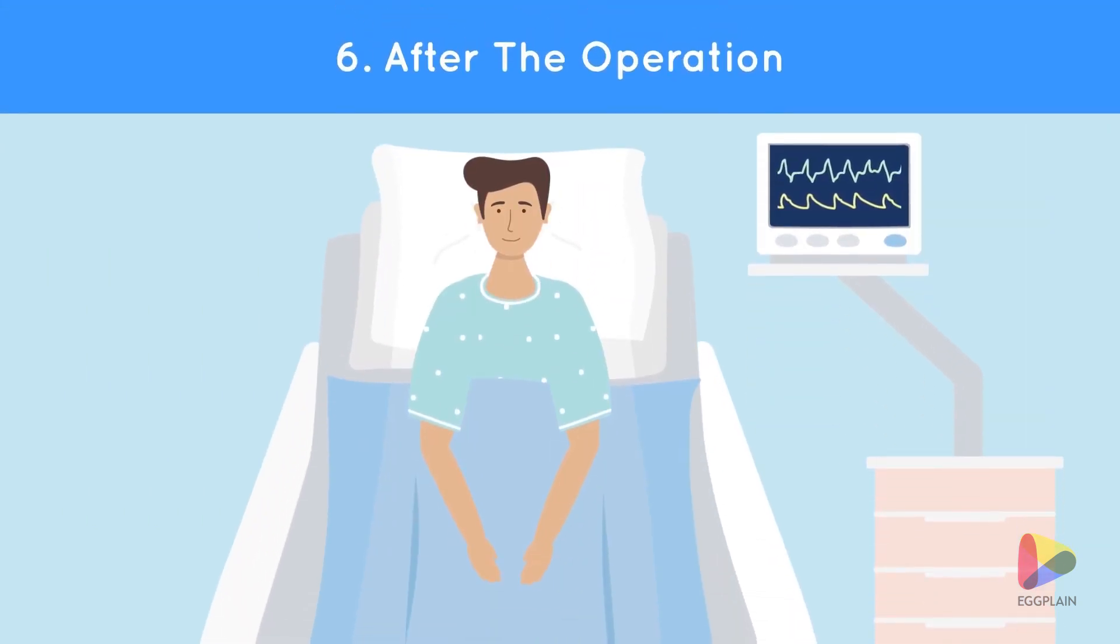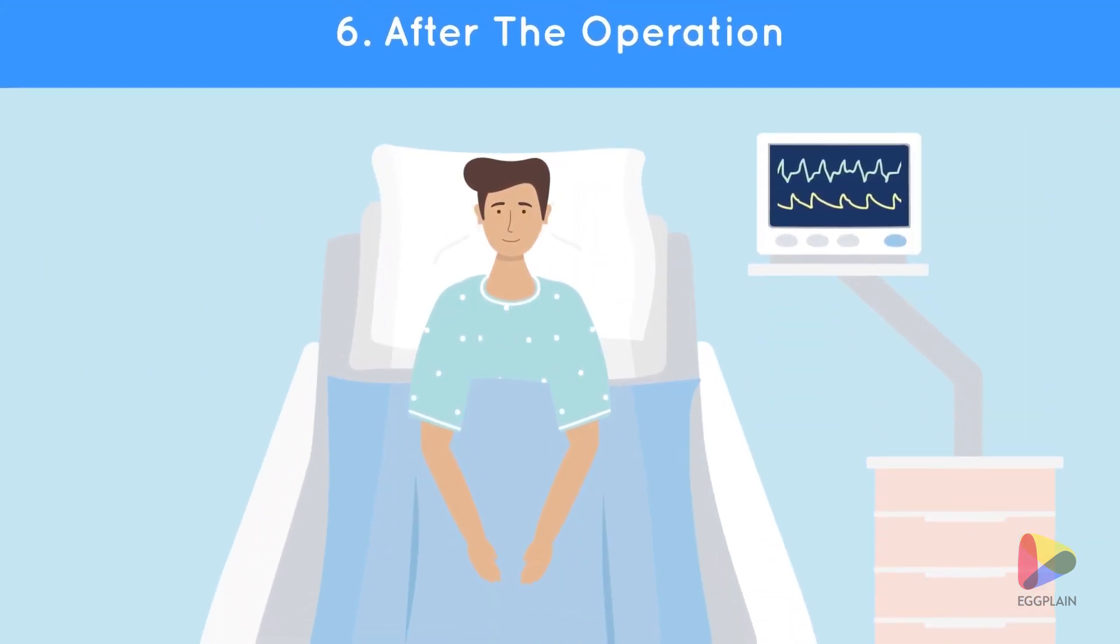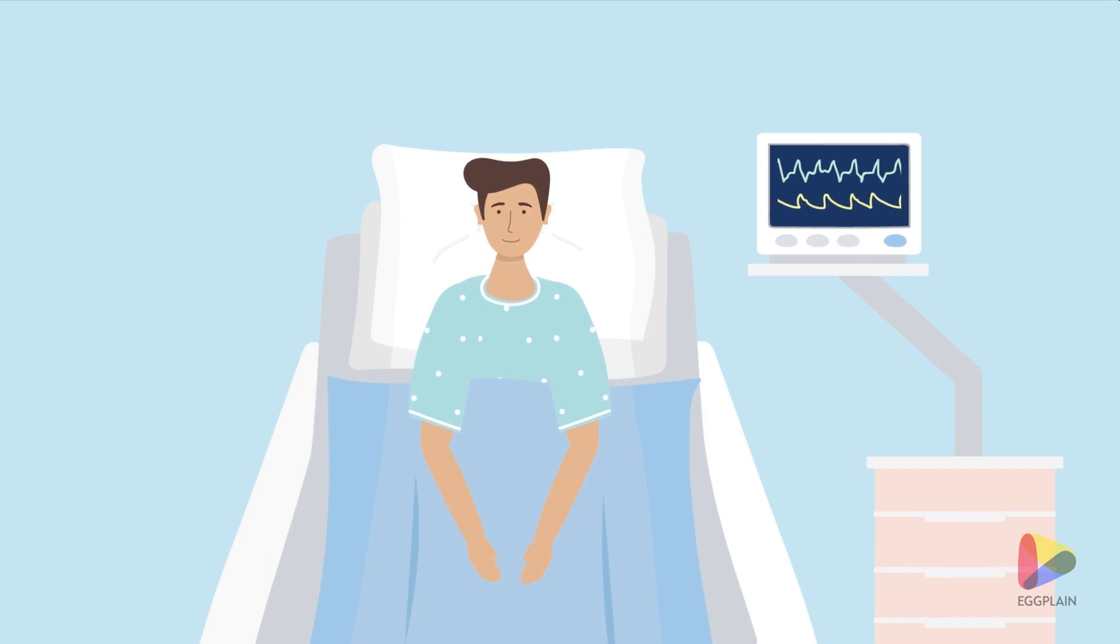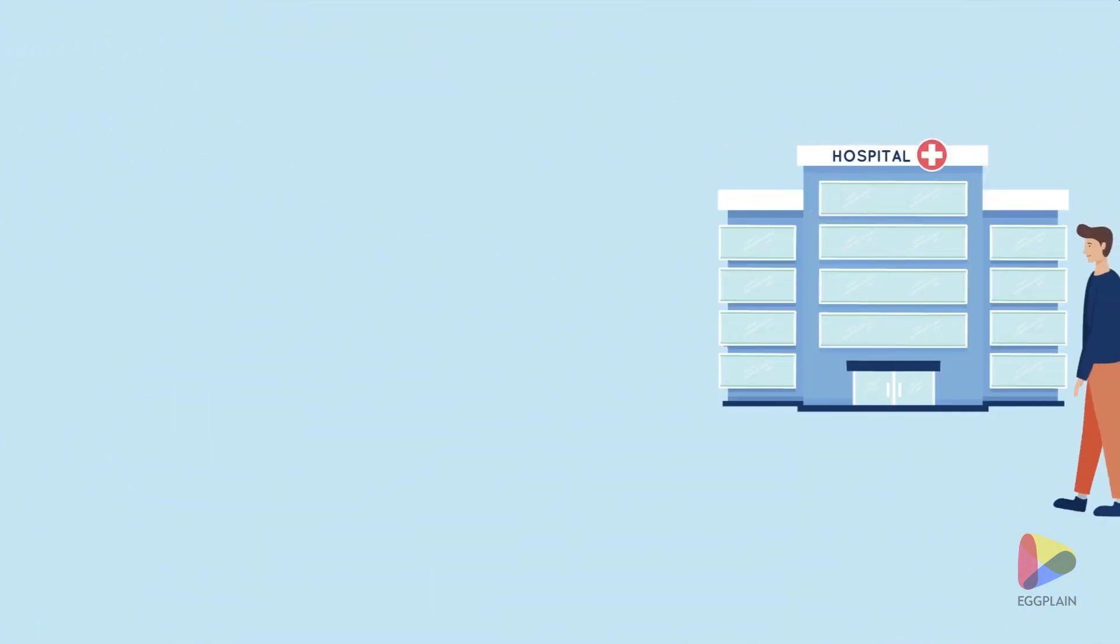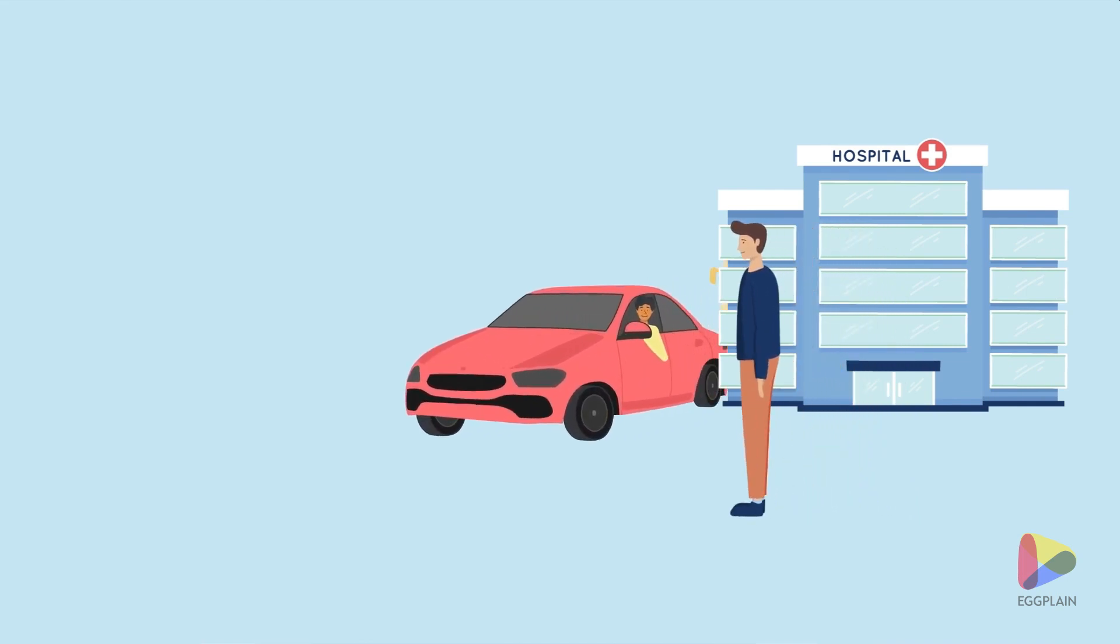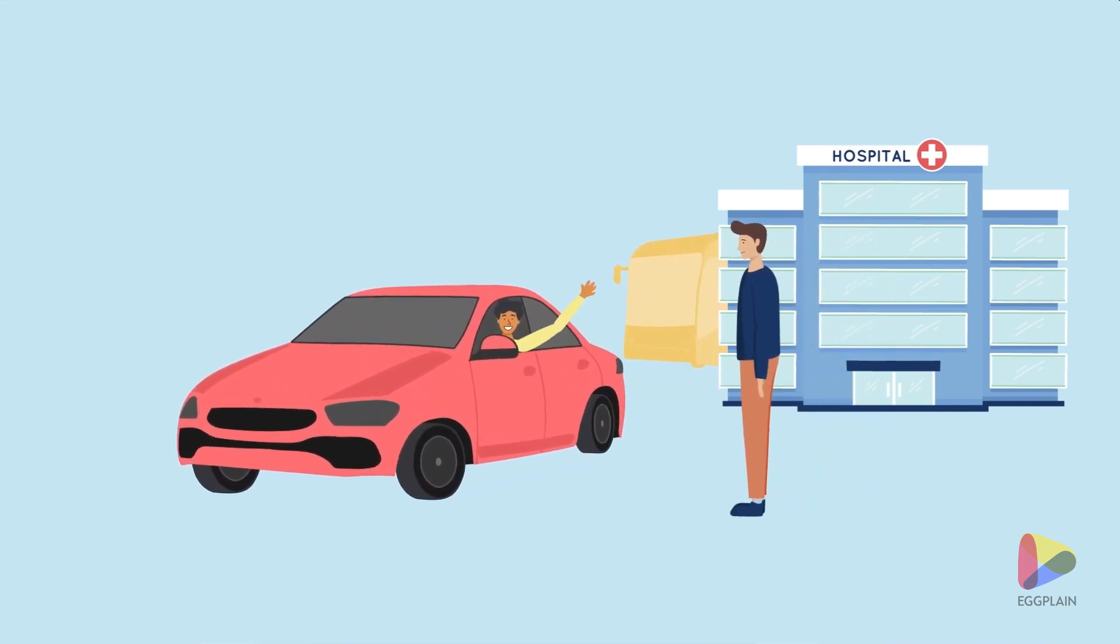Immediately after the operation, you will be taken to the recovery room for monitoring. When your heart rate and breathing are stable and you are fully awake again, the intravenous access to the arm or hand can be removed and you can go home with a prescription for painkillers. For the rest of the day, don't make any important decisions and you should not operate heavy machinery or drive a car by yourself.